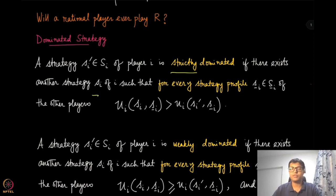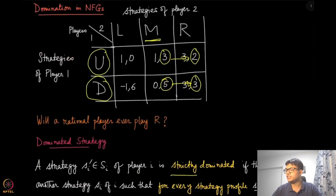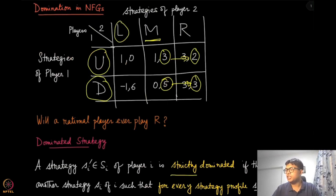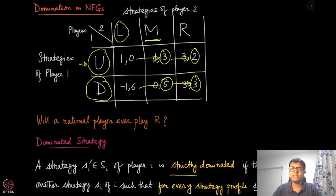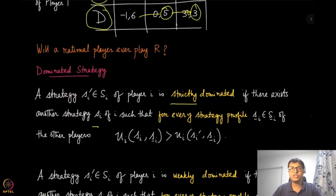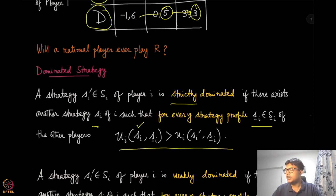A strategy Si prime is strictly dominated if there exists another strategy Si such that for every strategy profile of the other players, player i gets strictly more utility by playing Si than Si prime. Note that we did not say L is dominated by M, because even though Player 1 playing U gives a strict benefit, when the other player plays the strategy giving payoff 6, there is no strict benefit. So L is not dominated by M, but R is definitely dominated by M, because for every strategy profile of the other players, this strict inequality holds.